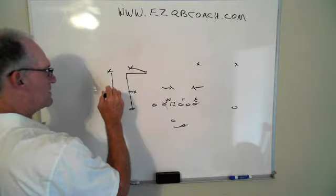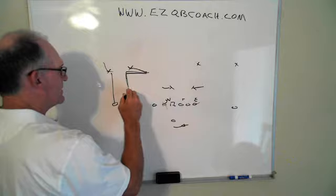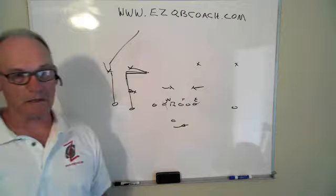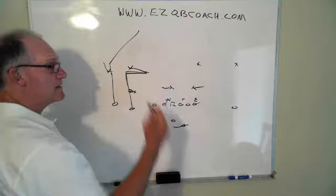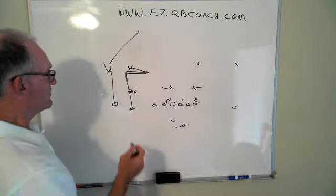This guy pushes up. So he's got him man to man now. This guy is going to try to bang him and he's responsible for the flat. Well, if he breaks to the post, who's helping the corner? The guy back there on a striped shirt, goal post, something, doesn't matter, but you've got a chance to break on him.